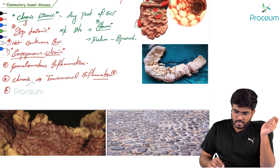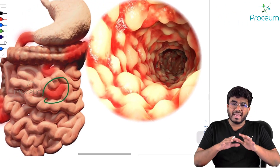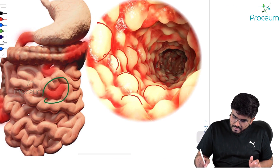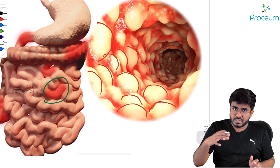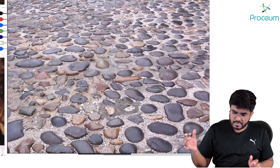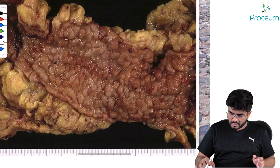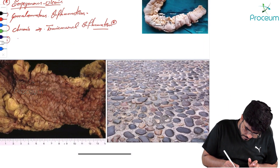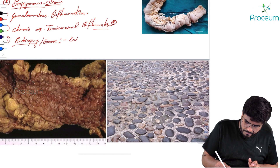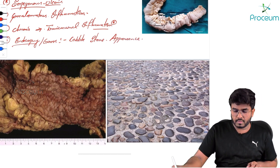If you do endoscopy, what will you see? These are important MCQs. There is inflammation and mucosal edema occurring. Because of that mucosal edema, the mucosa looks like stones on a pavement — like cobblestones on a road. So, Crohn's disease shows a cobblestone appearance on endoscopy.